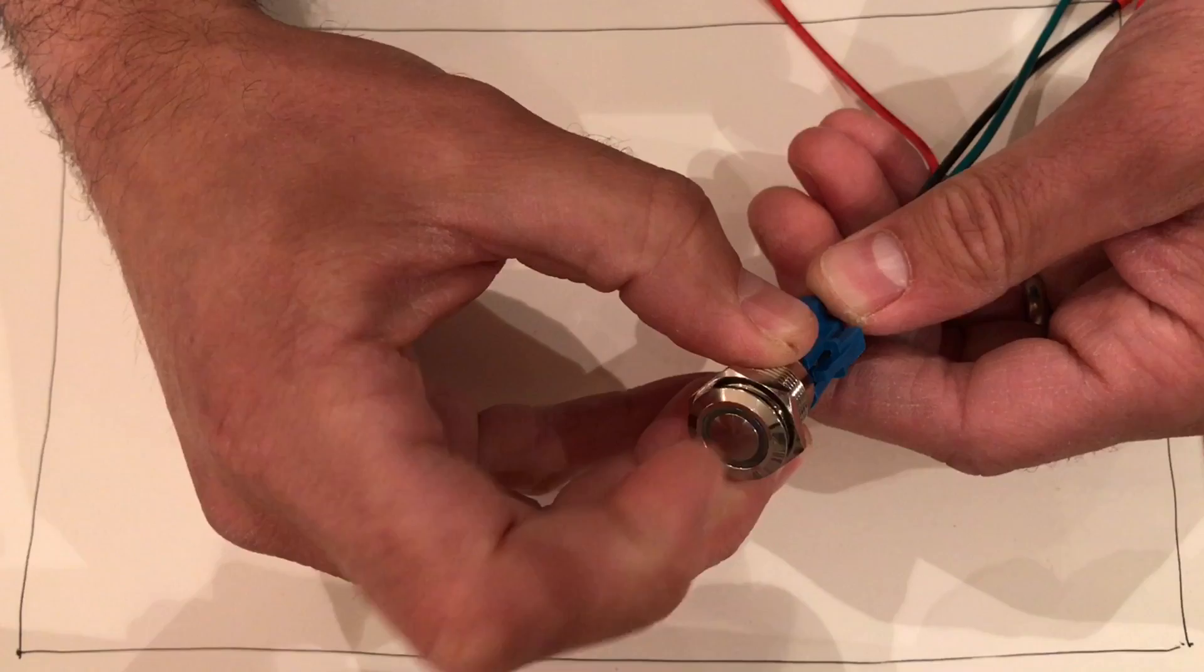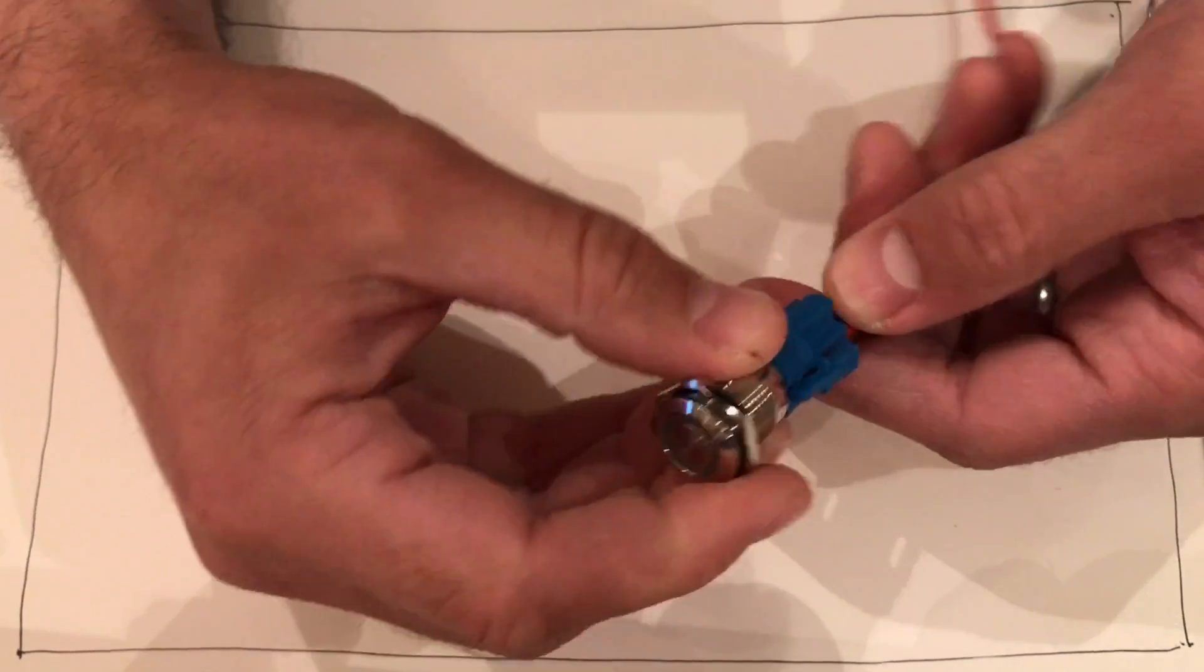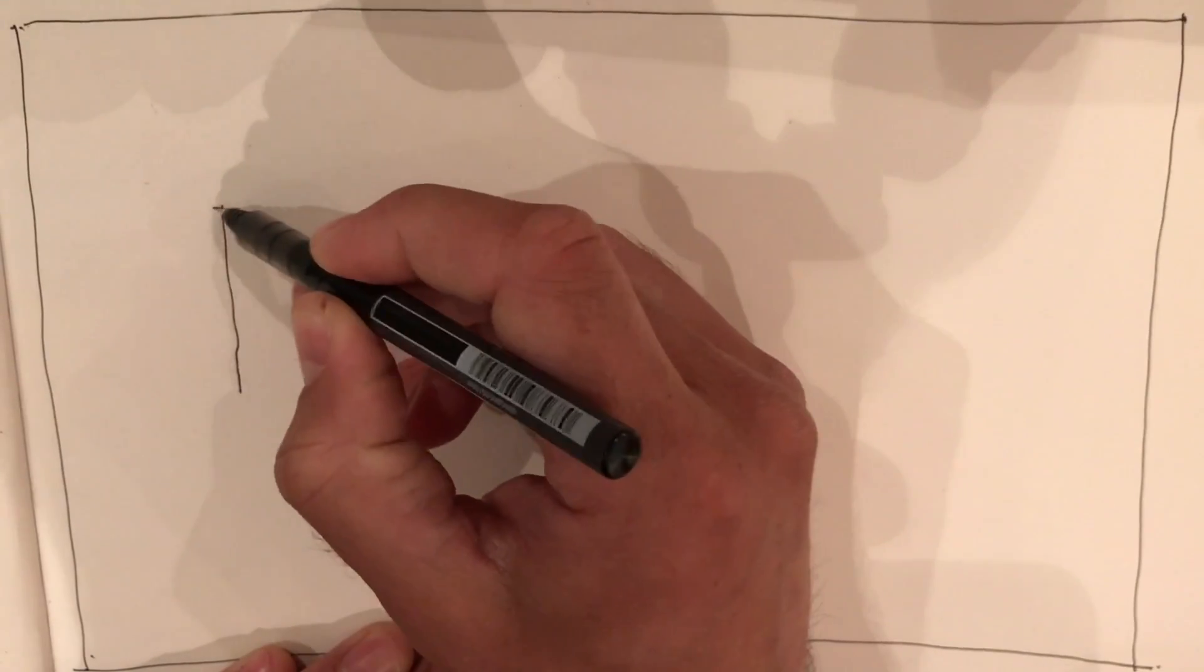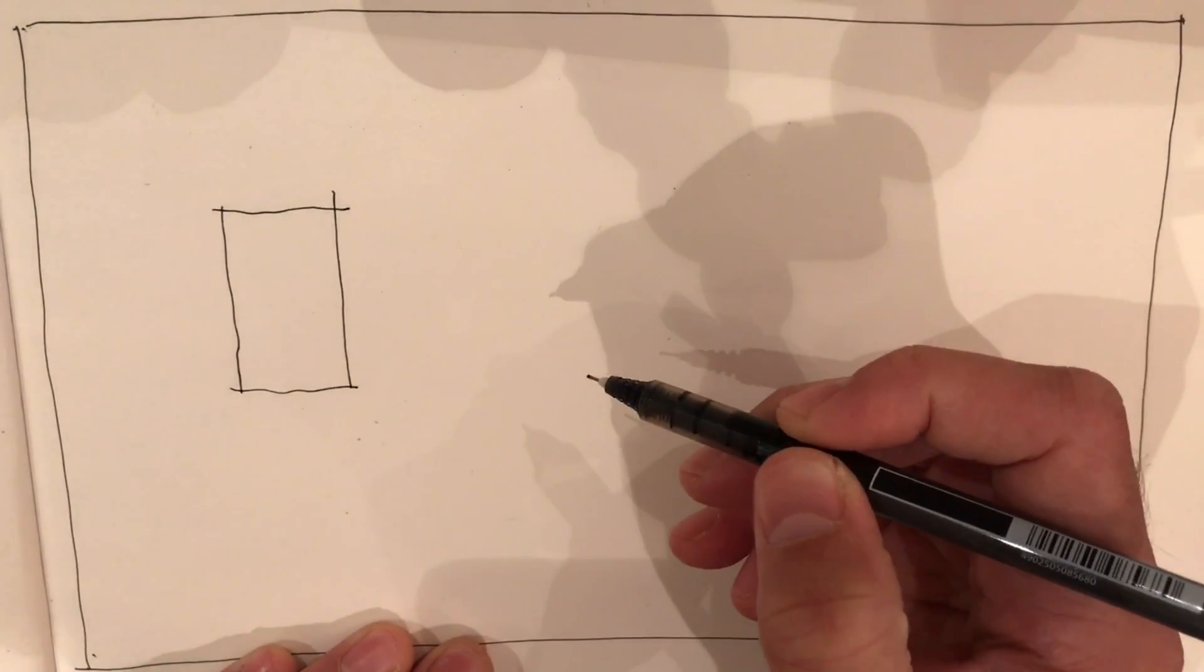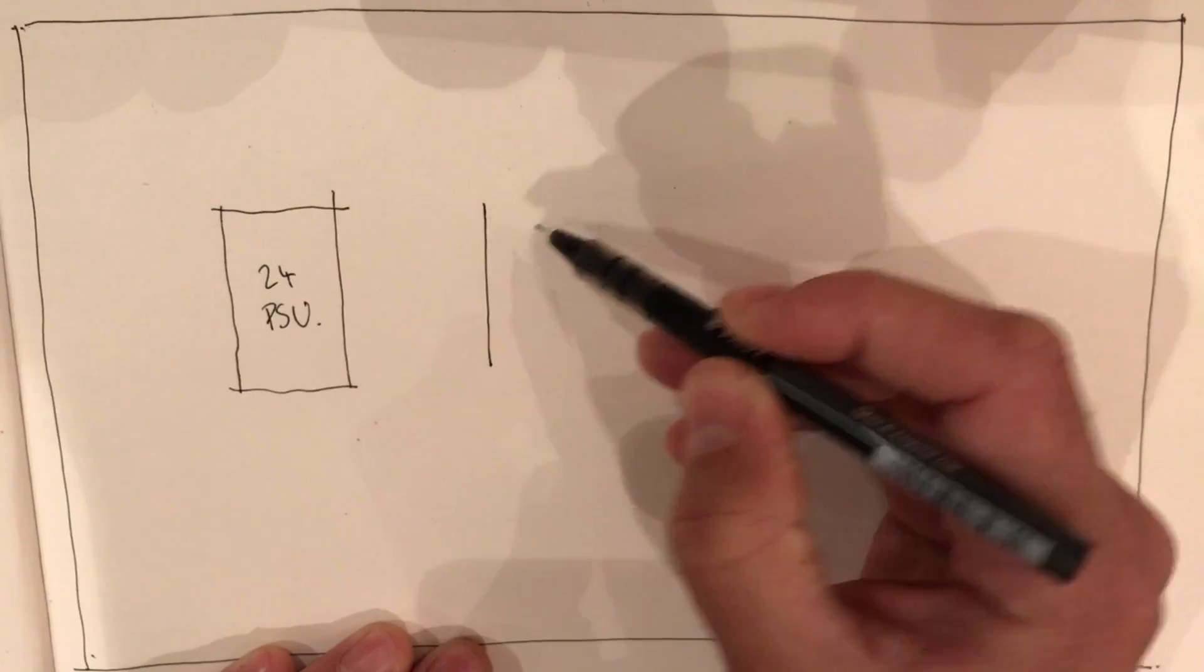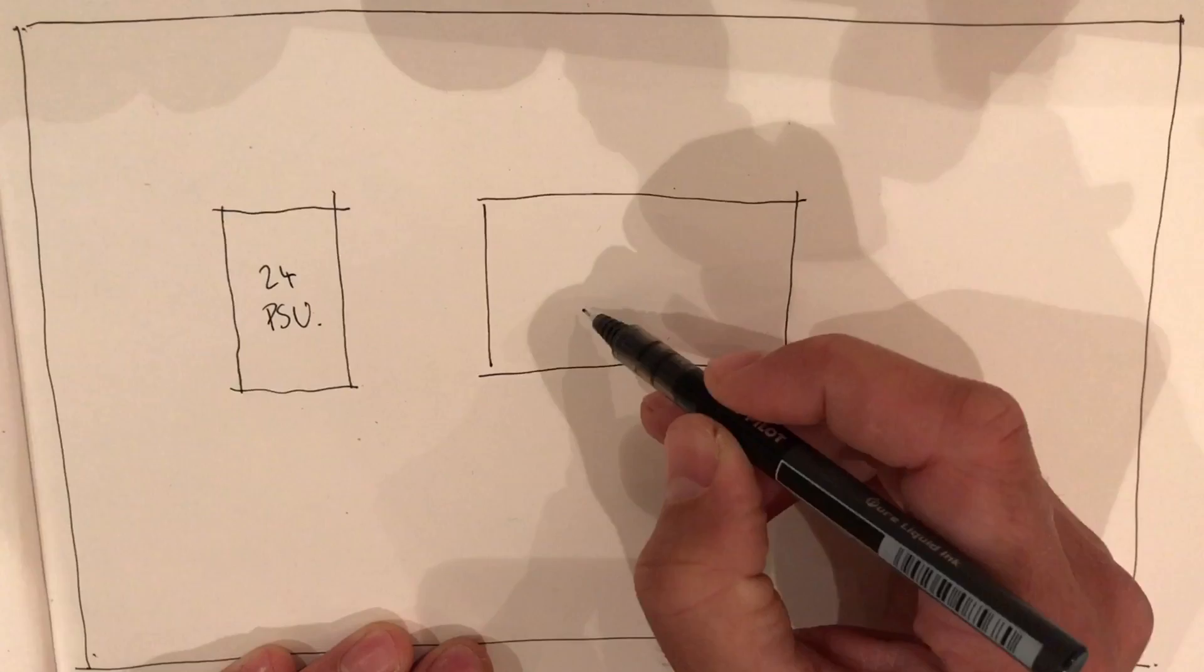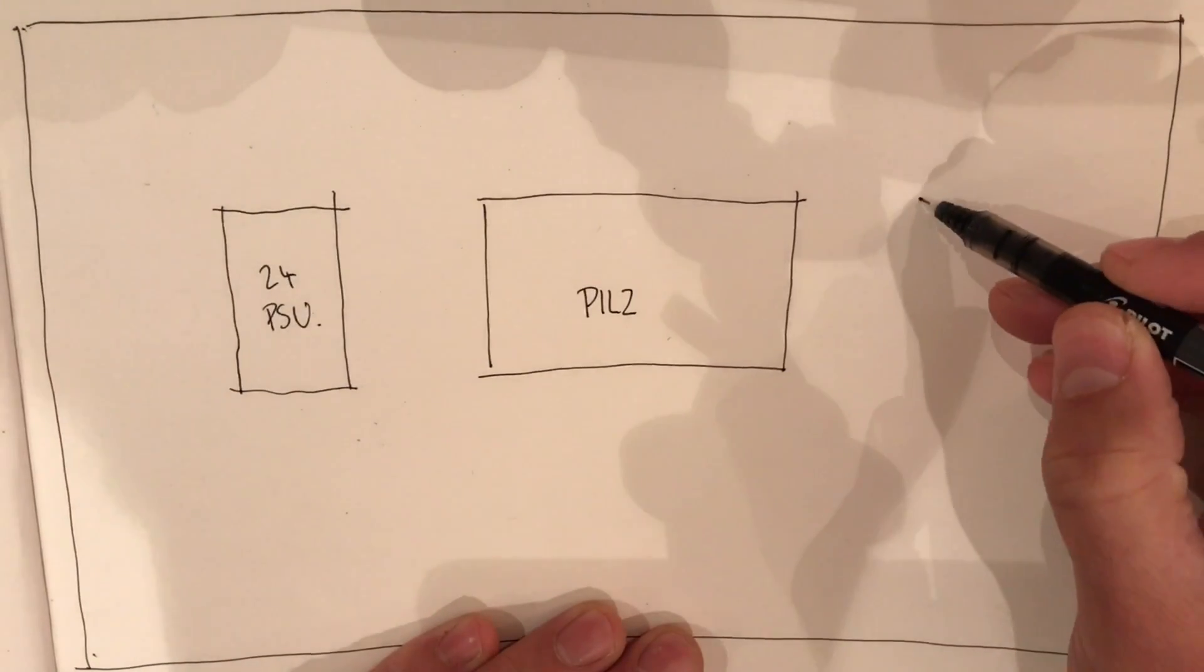Similar style, but this one is a latching switch for the main on-off for the relay. The circuit consists of a 24 volt power supply, the Pilz, and the contactor.